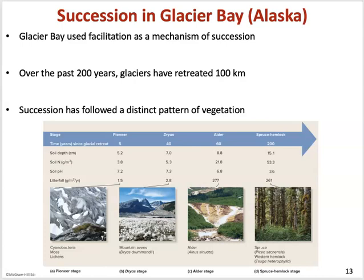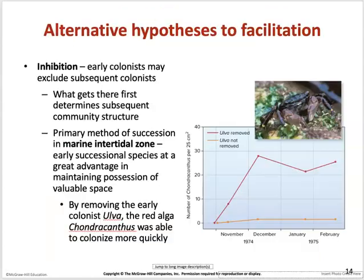Glacier Bay in Alaska has been used as a study site for facilitation and succession. Over the past 200 years, glaciers have retreated about 100 kilometers, and succession follows a distinctive pattern: starting with cyanobacteria, then moss and lichens, mountain avens, alder, and finally spruce. This process takes 5, 40, 60, and up to 200 years to see each successional stage fully established.